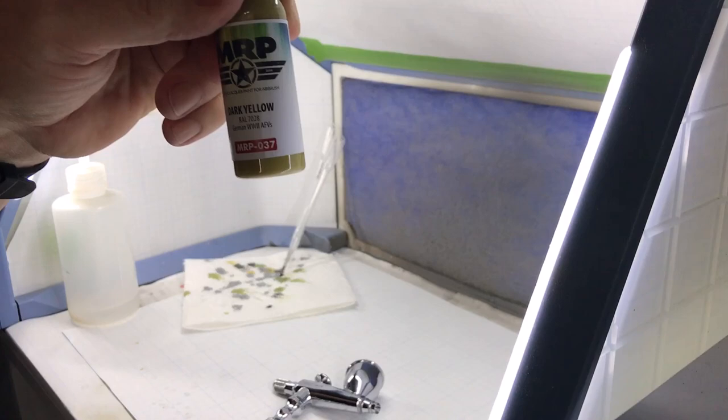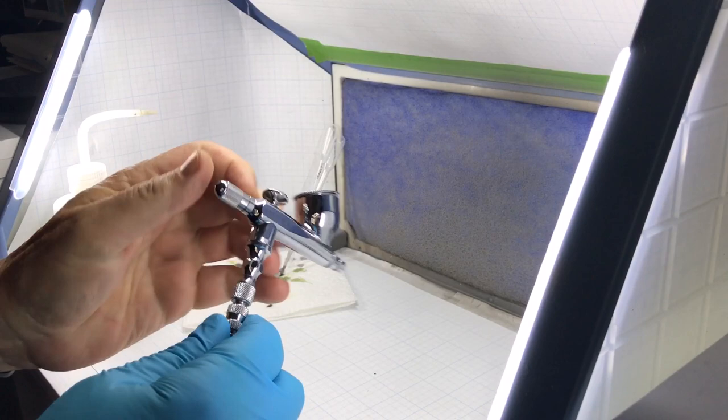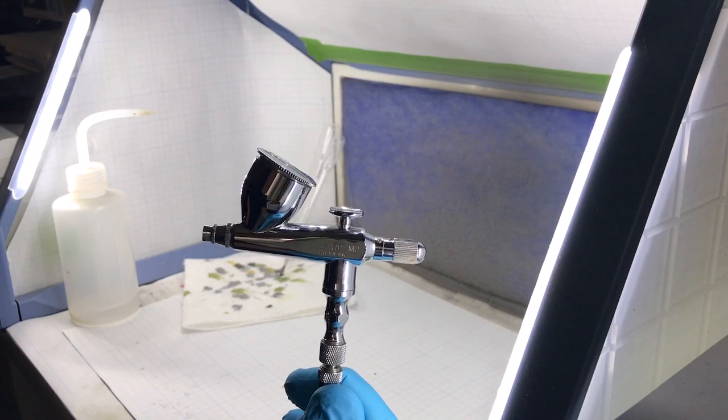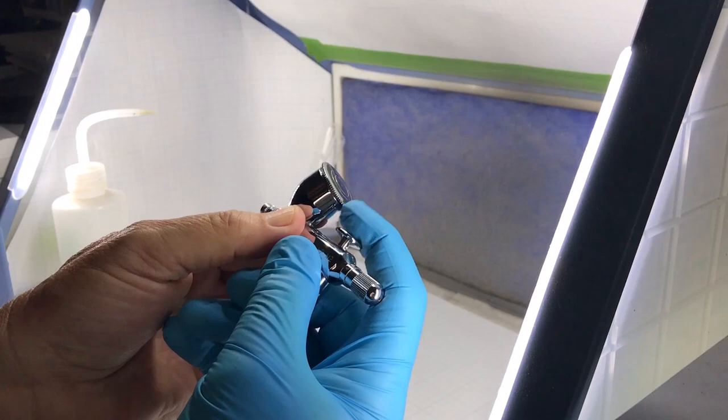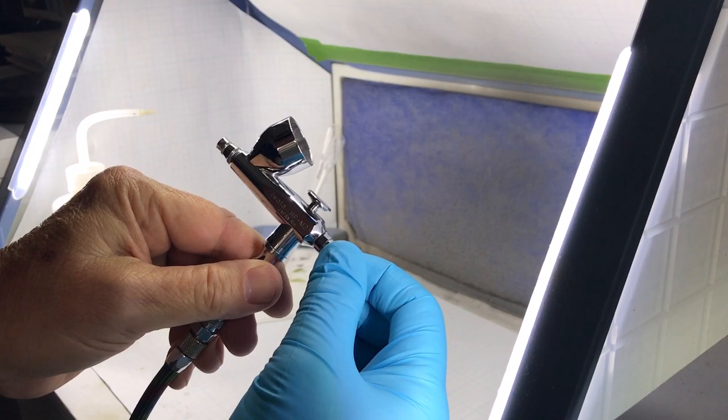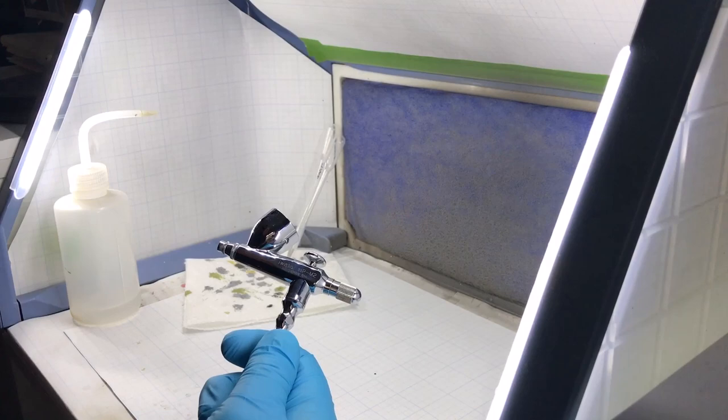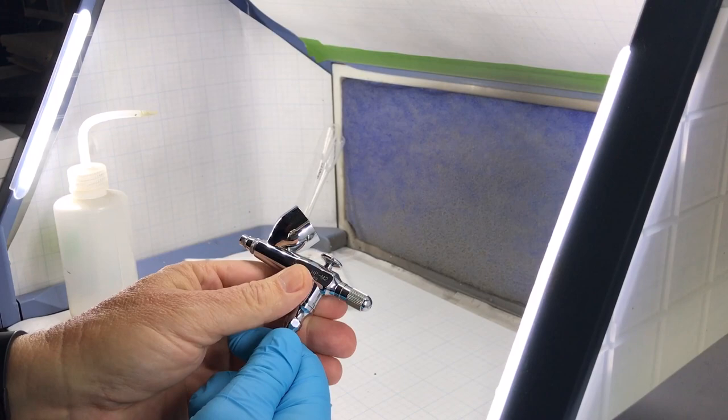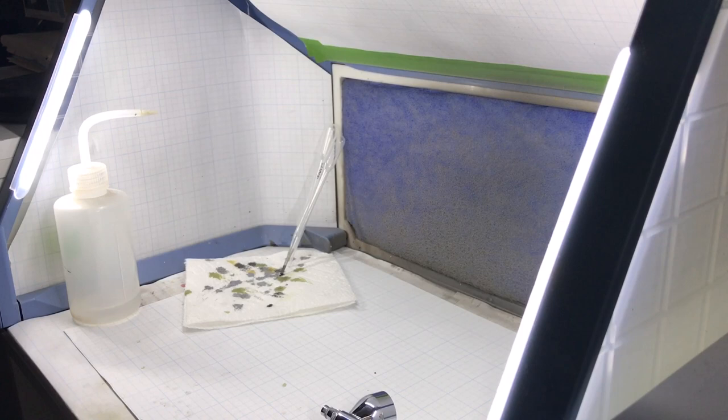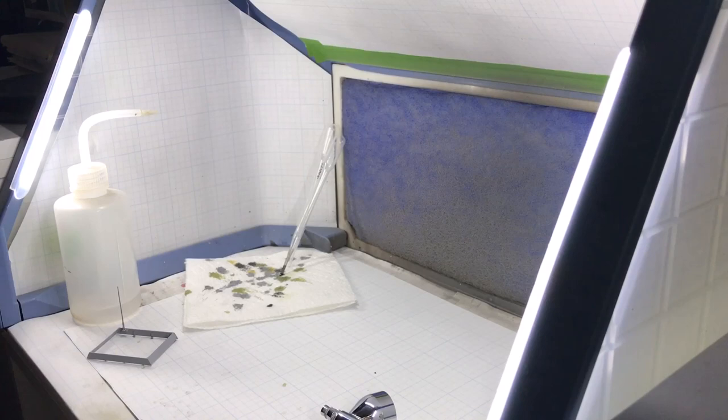Alright, got my paint, the MRP Dark Yellow. I'm using my Iwata HP-M2 single action to control the paint flow. You just turn this around. I like using it for single color paint jobs or base color paint jobs, smaller primer jobs.